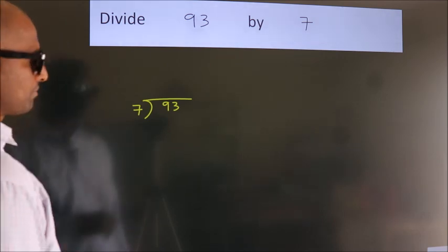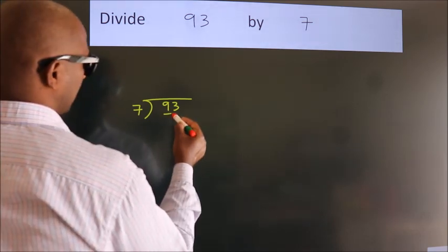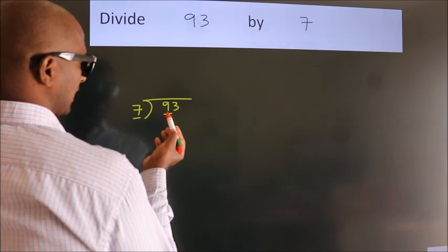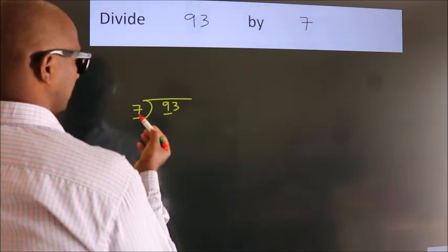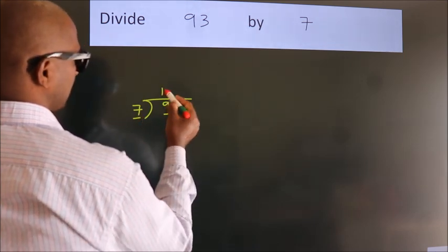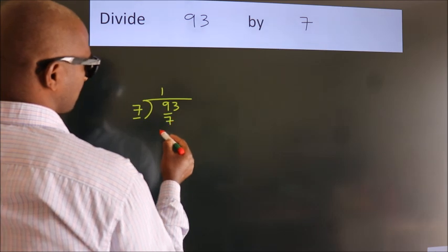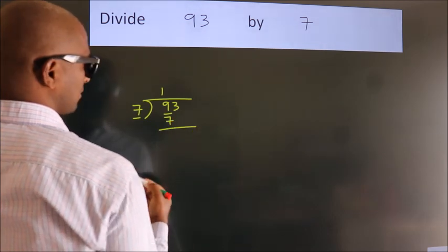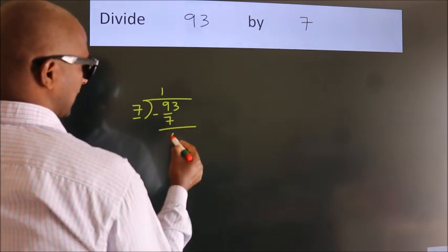Next. Here we have 9, here 7. A number close to 9 in 7 table is 7 once 7. Now, we should subtract. We get 2.